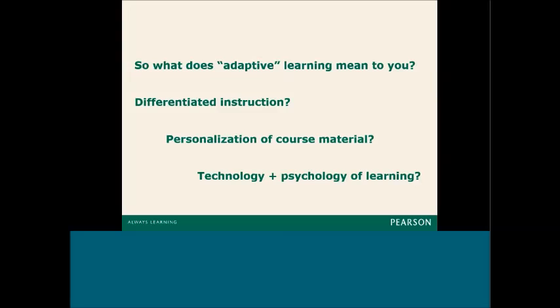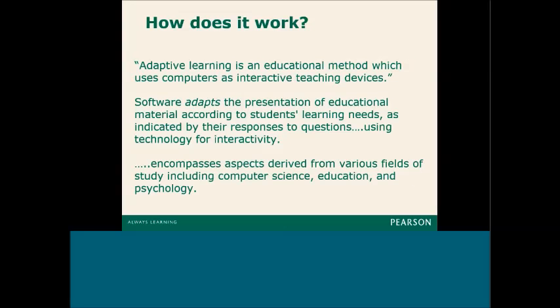If you've thought about what adaptive learning means to you, most of us think of differentiating the instruction, meeting students where they're at, addressing different learning styles, personalizing the course material, using technology to reach different learning abilities. That's all encompassed in what we mean by adaptive learning. Basically you're using the computer as an interactive teaching device, so software is adapting the presentation according to student learner needs. Each student could have an entirely different study plan or course experience based on ability levels and how they're responding to assessments. It's a very personalized approach while still addressing and holding students accountable to course objectives.